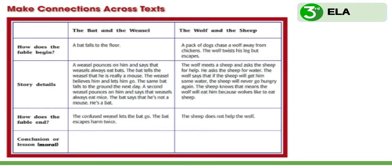Let's think about the lesson or moral that we can learn from each of these stories. The moral from The Bat and the Weasel is that we should always make the best of a bad situation. And in The Wolf and the Sheep, we can remember that selfish lies are simple to see.